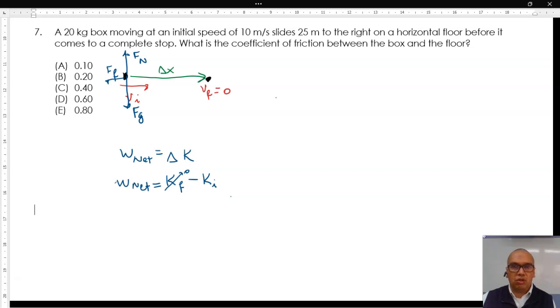Using the definition of work, we have friction times displacement times cosine of 180 degrees is equal to the negative of one half times the mass times the square of the initial speed.